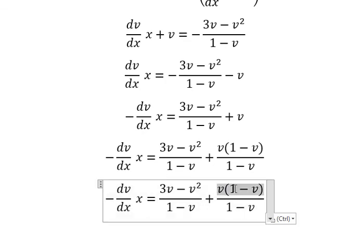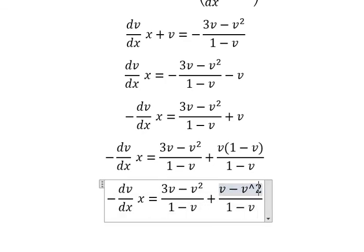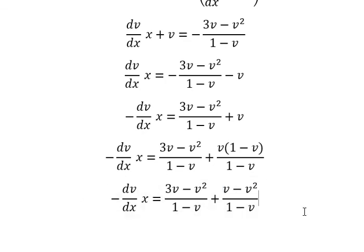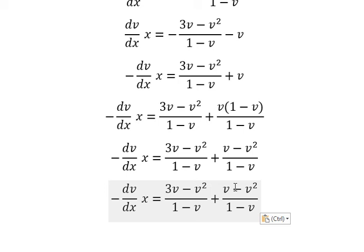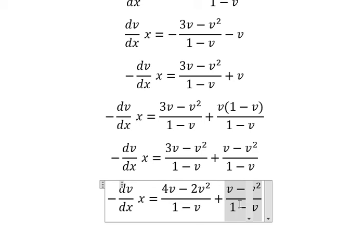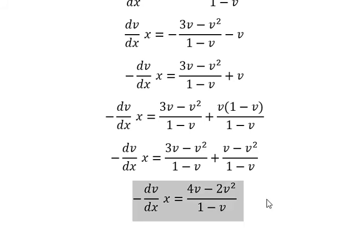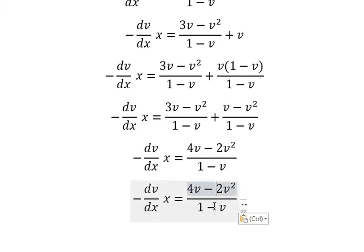So this one we have 3v - v². This one we have 4v - 2v² in the numerator. We have 1 - v in the denominator. And now I will put this one to the left and x to the right.